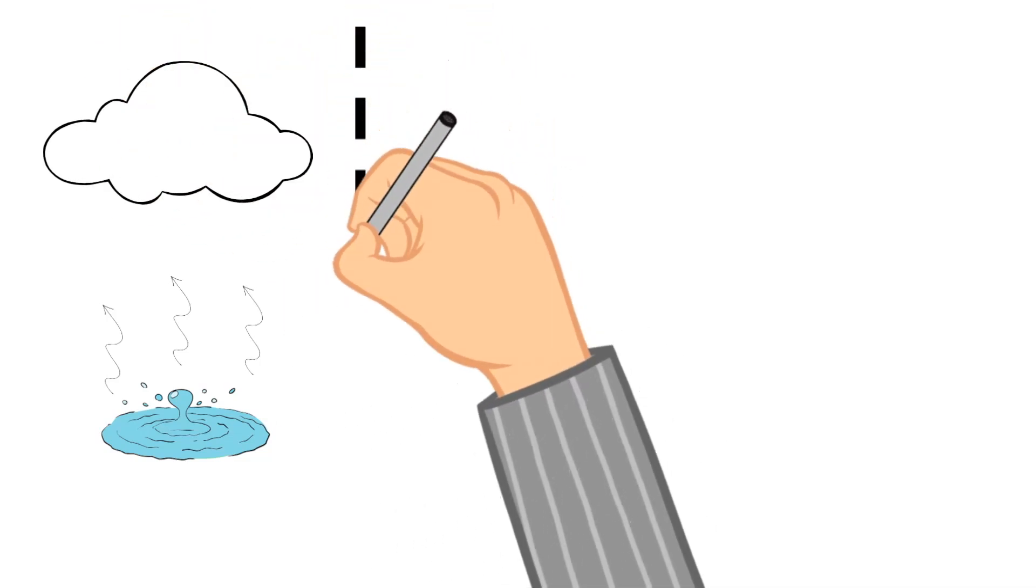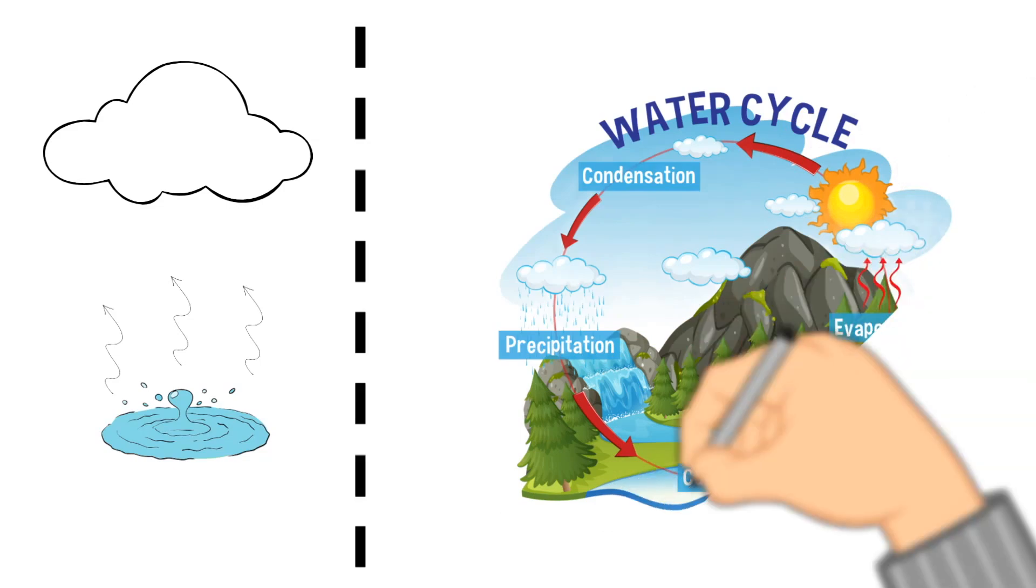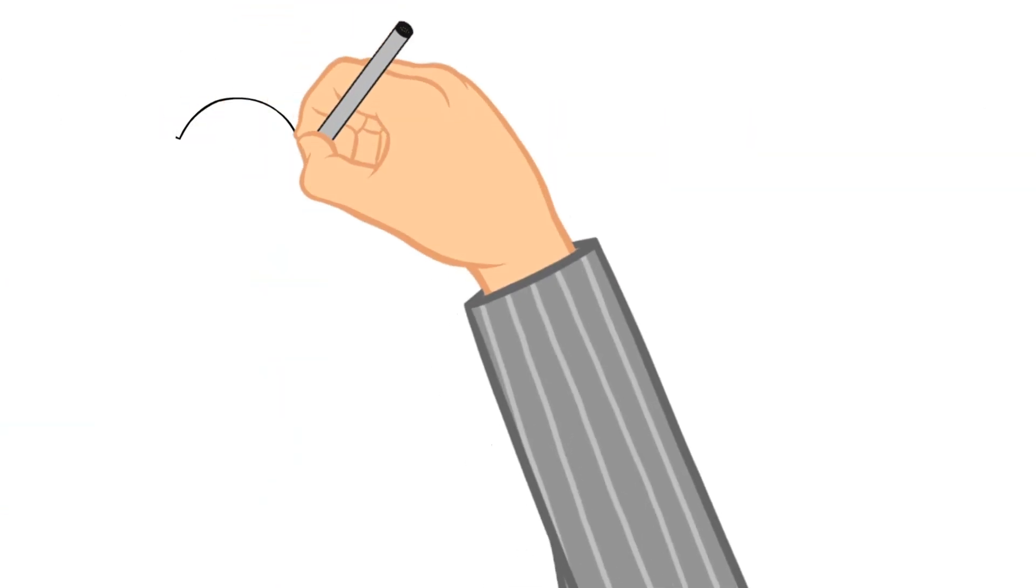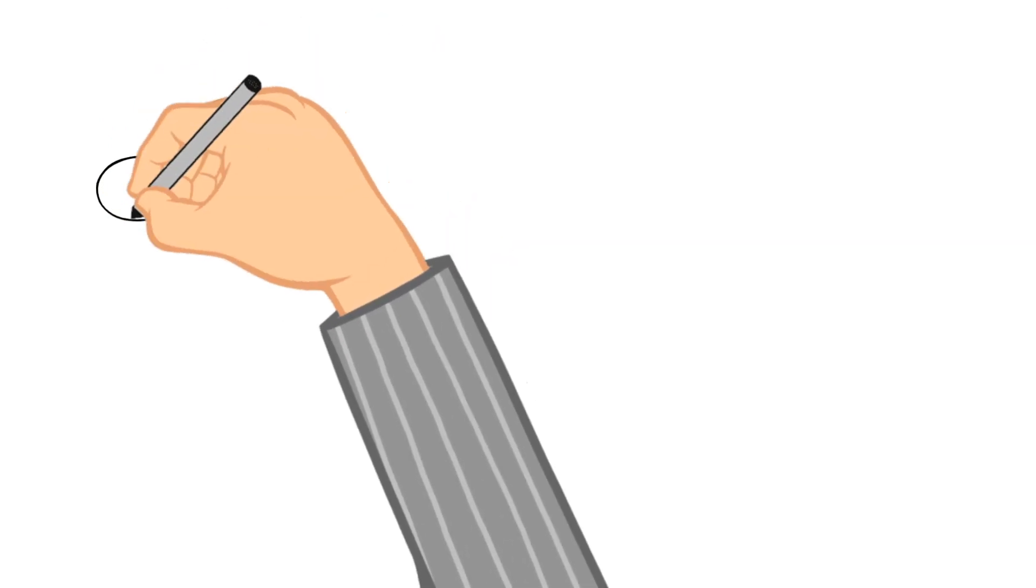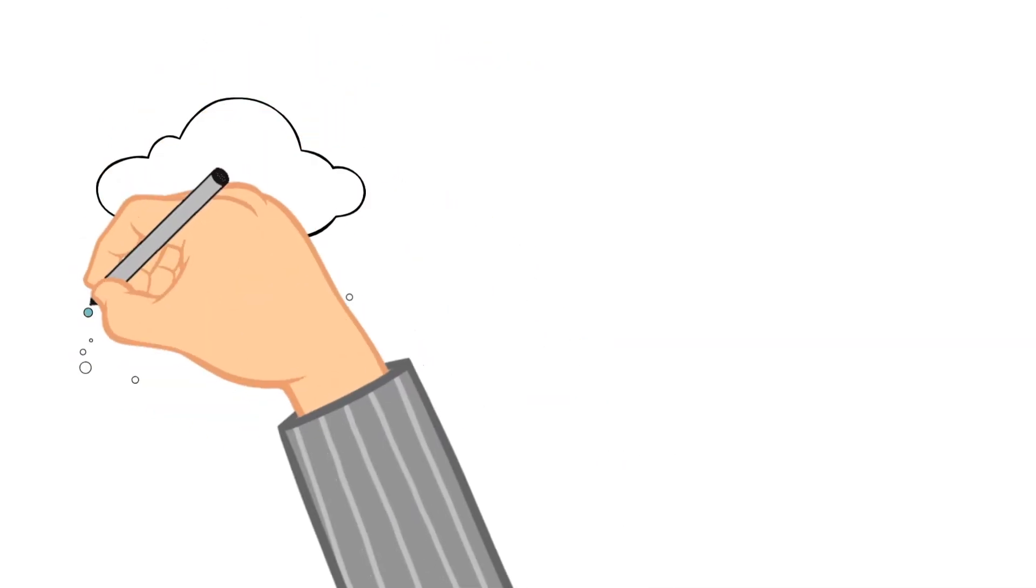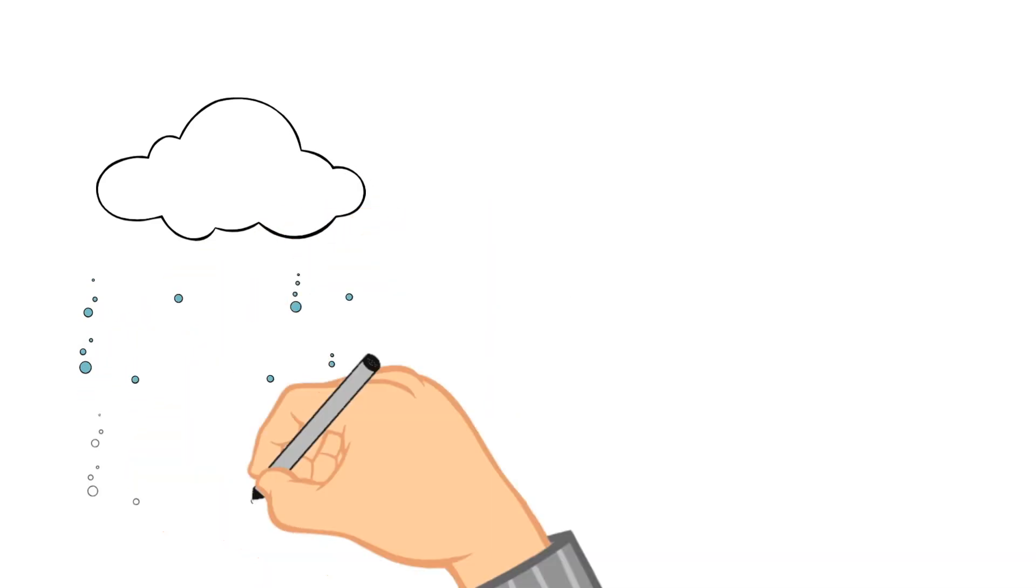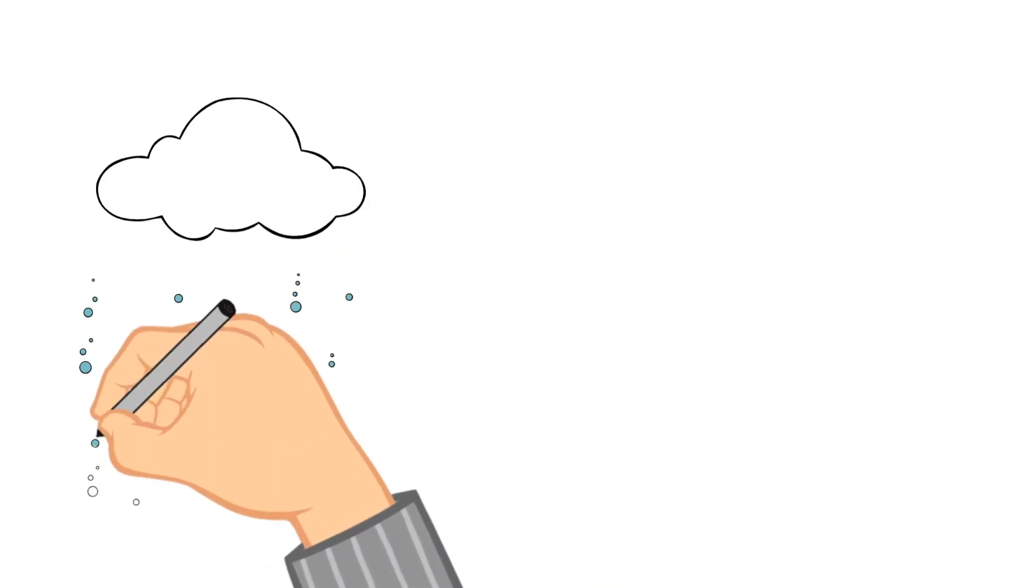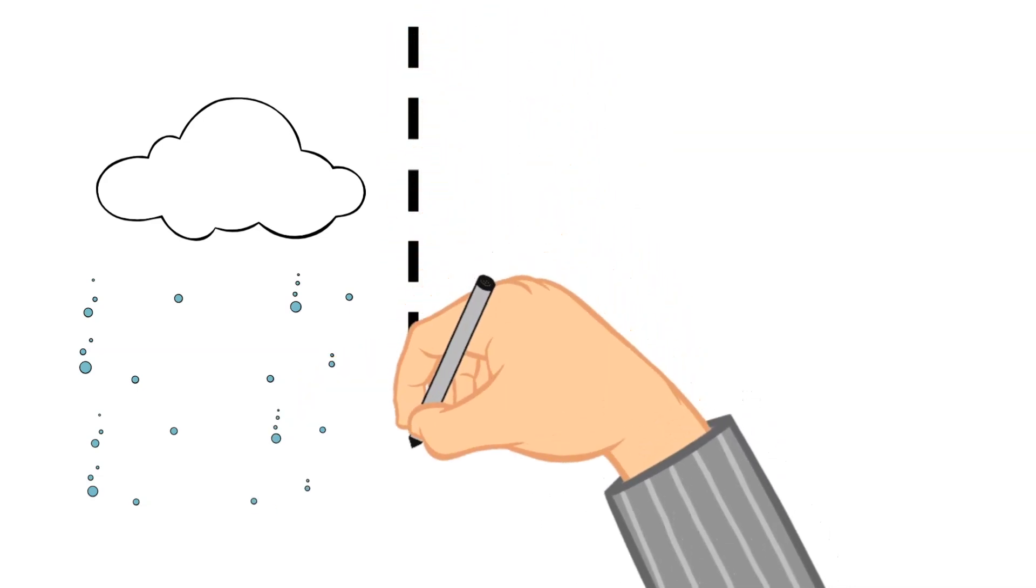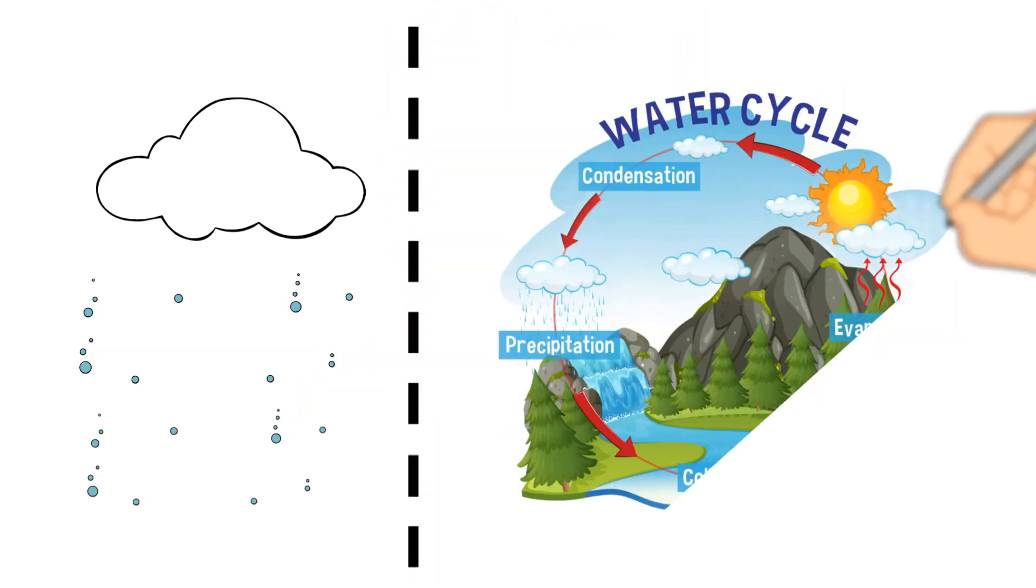Then we move to precipitation. When too much water has condensed, then water droplets in the clouds become too heavy for the air to hold them up, and so they fall back down to the earth. They can fall back down to the earth as precipitation through rain, hail, or even snow.